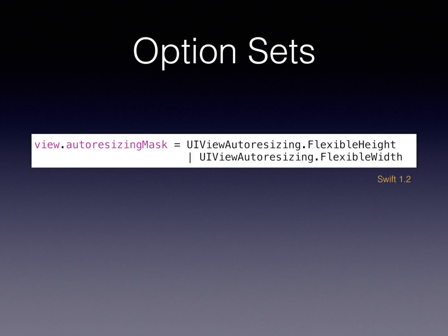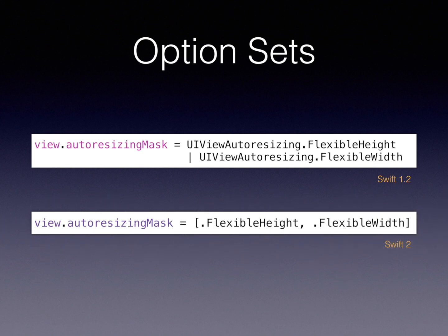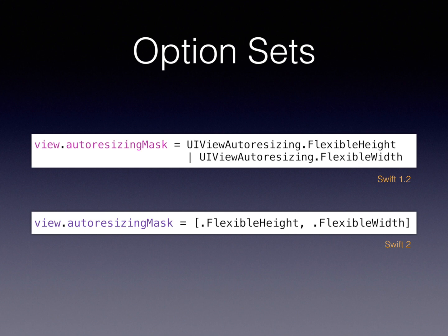For option sets: a classic example is the autoresizing mask. In the past those were bitmasks OR'd together with pipe symbols - lots of problems and ugliness. Apple decided to make these real sets, defined with square brackets and individual values separated by commas. Another side effect: to specify no options, in the past you'd write UIViewResizingNone or UIViewResizingMask with raw value zero. Now you just pass empty square brackets - not even nil, because these options are often not nullable. An empty option set is simply [].